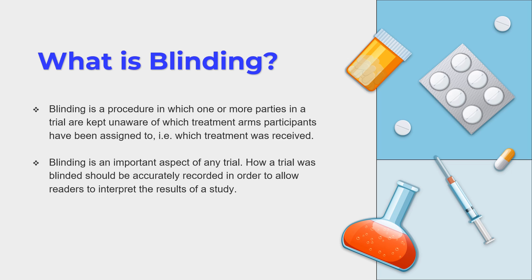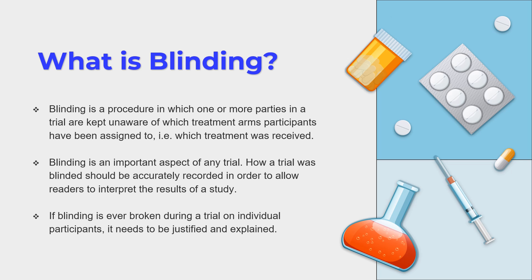When it comes to blinding, one or more of the parties in a clinical trial — such as the study participant, the investigator, or the sponsor — are unaware of the treatment being given. For example, in single blinding, one particular party is kept unaware. This method of blinding is important because it helps accurately record and interpret results in an unbiased manner. If blinding is ever broken during a clinical trial, it needs to be justified and explained, because in a blinded trial, you cannot make everyone aware of the treatment allocation — certain parties must remain unaware to ensure fair result analysis and clear distinction between data sets.